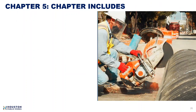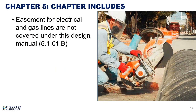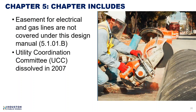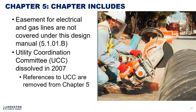We've updated the chapter includes section of Chapter 5. We clarified the scope by noting that easements for electrical and gas lines are not covered by the city's Infrastructure Design Manual. Also, it was identified that the Utility Coordination Committee was dissolved in 2007, so references to the UCC were removed from this chapter.